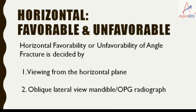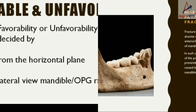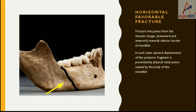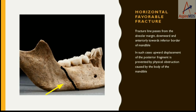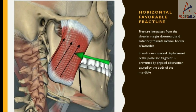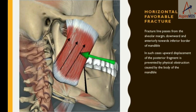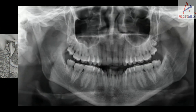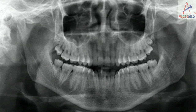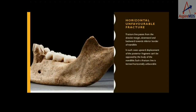Horizontal favorability or unfavorability is assessed by viewing the fracture in the horizontal plane, such as on OPG or lateral oblique view. In a favorable fracture, the fracture line passes anteriorly and inferiorly such that the proximal fragment will not be able to displace. The masseter pull is obstructed by the distal fragment, preventing displacement. In this OPG, we can see the fracture line passing anteriorly where no displacement has taken place, confirming it is a favorable fracture.